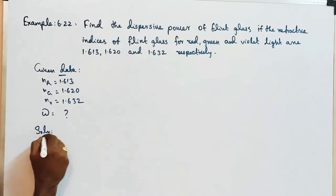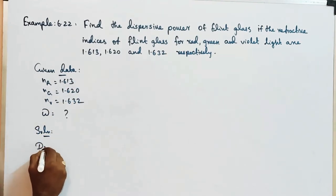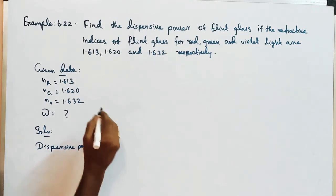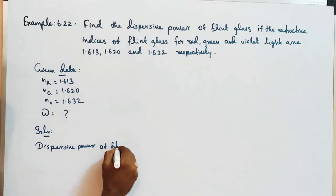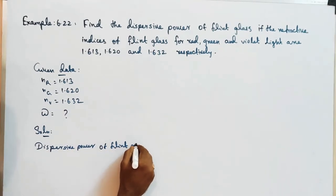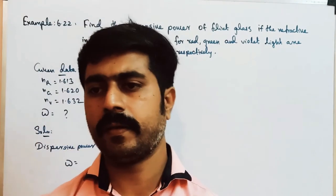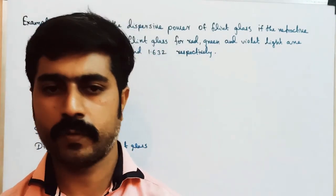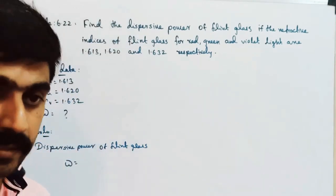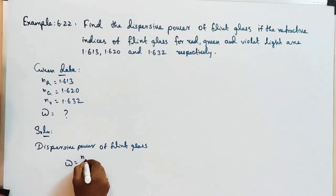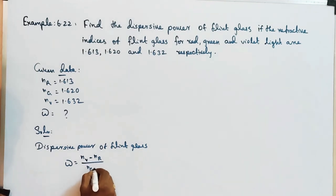For the solution, dispersive power of flint glass — what is the formula? Dispersive power of a glass prism: omega is equal to NV minus NR divided by NG minus 1.